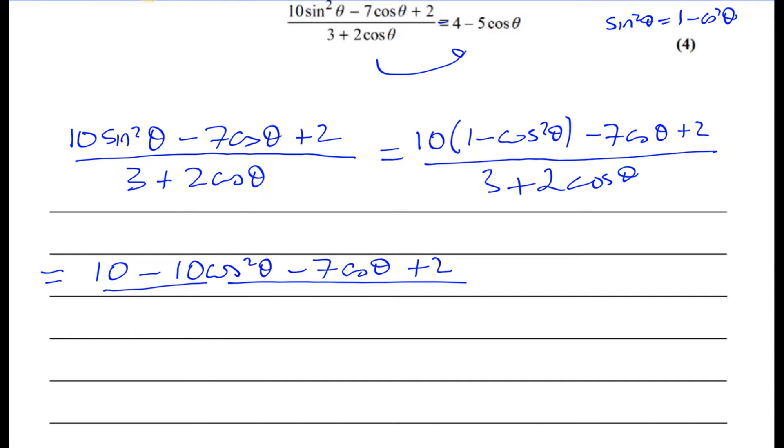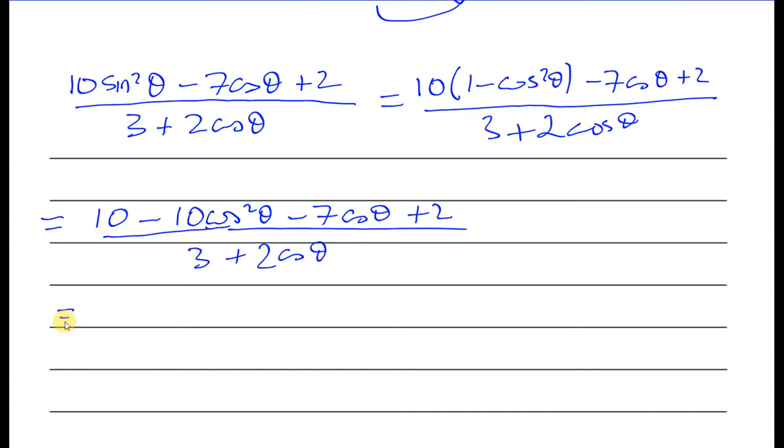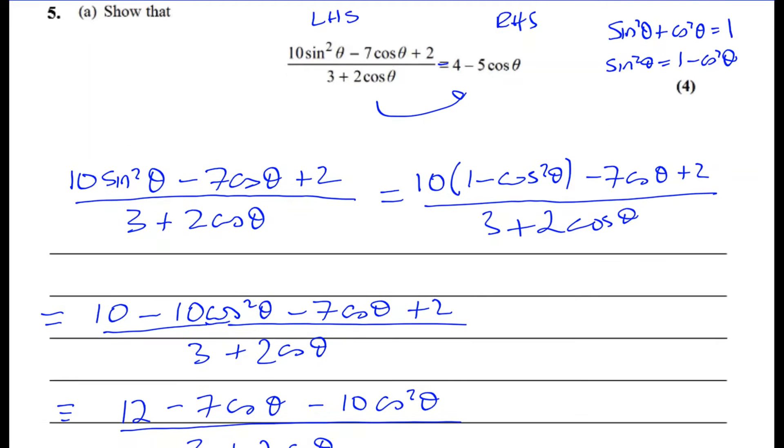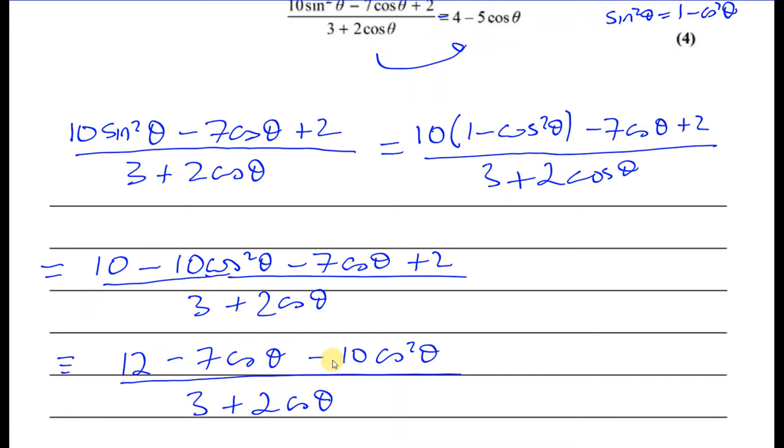I'm going to rewrite this actually because I can see what's happening. I'm going to rewrite this as 2cosθ + 3. In fact I can leave it at that because I see something happening. I think I've spotted what's going on here. So you can now have 10 + 2 which is 12, and I'll write it in this way: 12 - 7cosθ - 10cos²θ divided by 3 + 2cosθ. Now I have a sneaky suspicion that this can be factorized, and you'll end up with two factors, one of them will be 3 + 2cosθ and the other one will be this, and they'll cancel out.